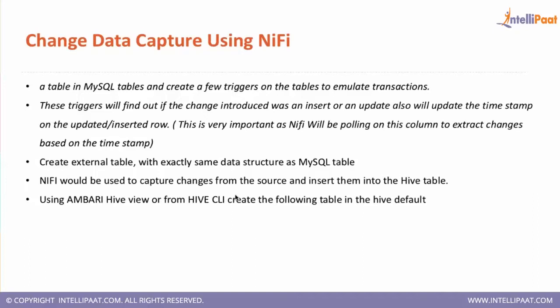Table one is your source table and table two is your destination table. The actual result should be: let's say the source table has 10 records. On the first extraction, the destination table two will also have 10 records. But the process will keep running, and if you add four or five more records to table one, you shouldn't need to do anything — those additional records should automatically be added to table two as well.